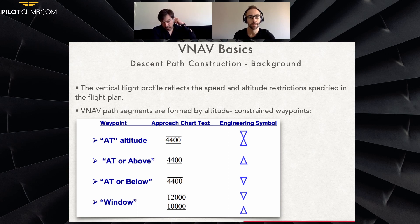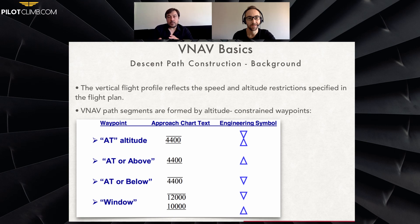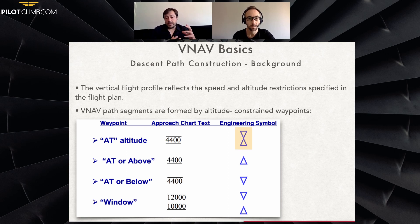The constrained waypoints are formed by altitude. The 'at altitude' constraint is represented by two lines — you'll see this on a Jeppesen chart or similar. Basically the engineering symbol the VNAV gives you is two triangles facing each other, which tells you that it's 'at this altitude.'